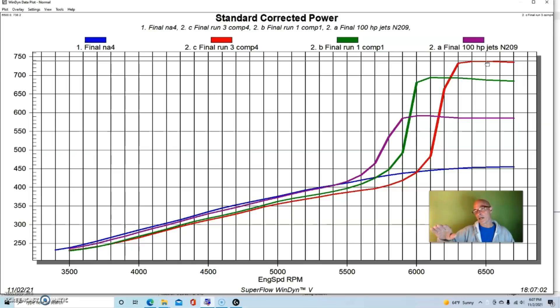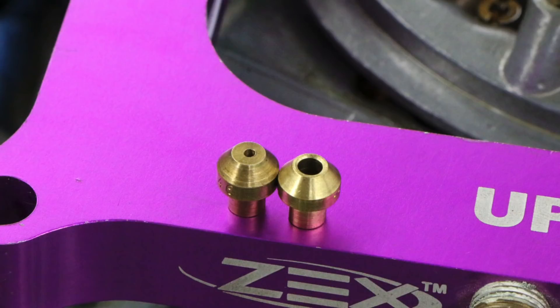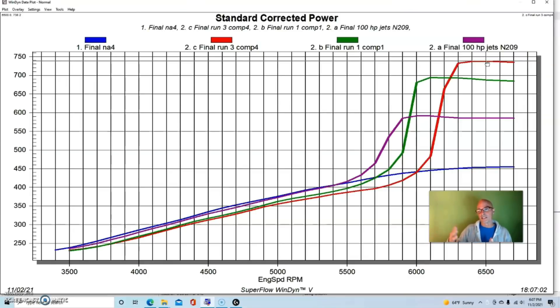You can see as we're going up and up, even though we're going up fairly big jumps, we're taking fairly big swings at the nitrous jetting, we're getting less and less of a gain. There's two reasons for that. One is that the motor eventually would get to a point where based on its NA power output it just can't process any more nitrous. We're talking about a 450 horsepower motor running almost 300 horsepower worth of nitrous, so it gets to be an awful lot.